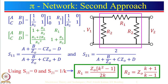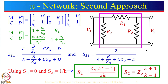There is another way to analyze the pi network. Recall we have also studied ABCD parameters, so this network can be solved using ABCD parameters. The network is divided into three segments: a shunt admittance, a series impedance, and another shunt admittance. The ABCD matrix for a shunt admittance is [1, 0; y, 1] where y = 1/R2, and for the series impedance it is [1, z; 0, 1] where z = R1. We multiply these three matrices to get the final ABCD matrix.